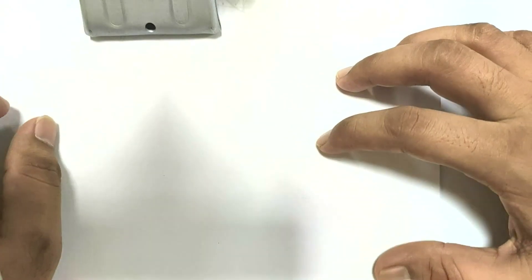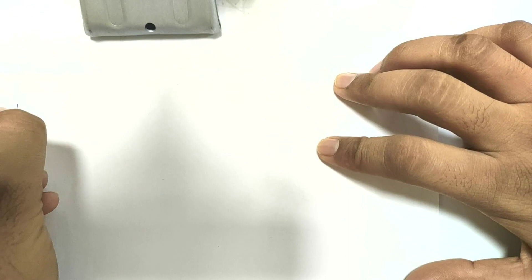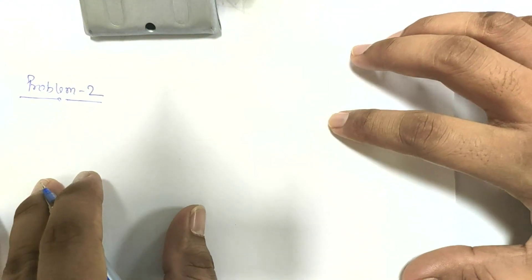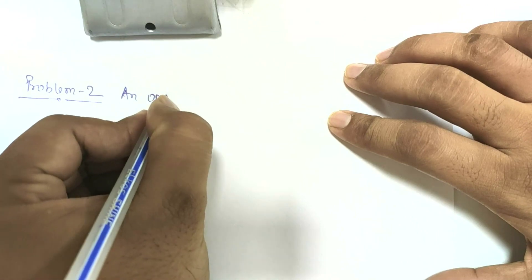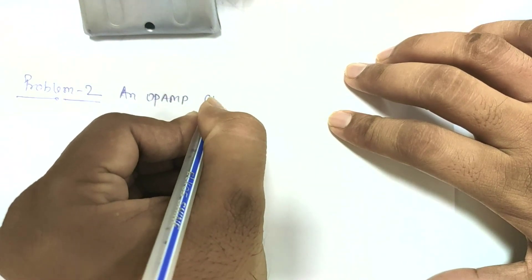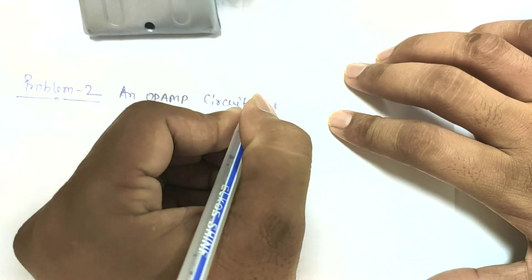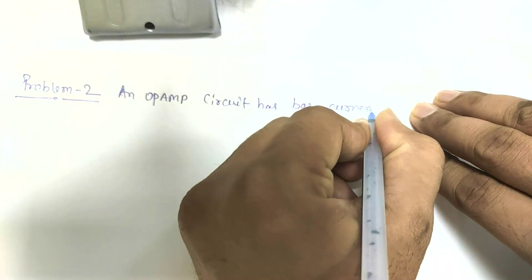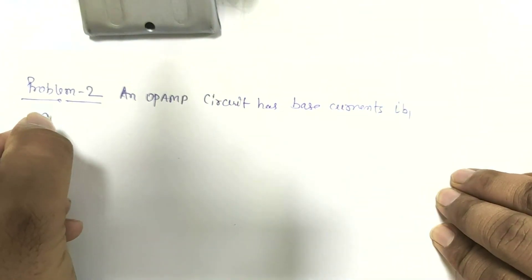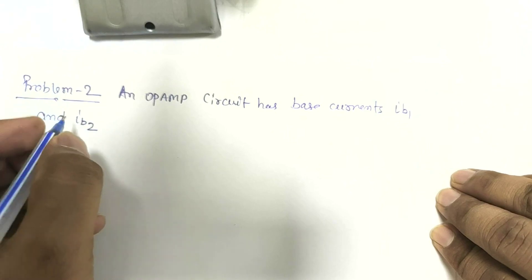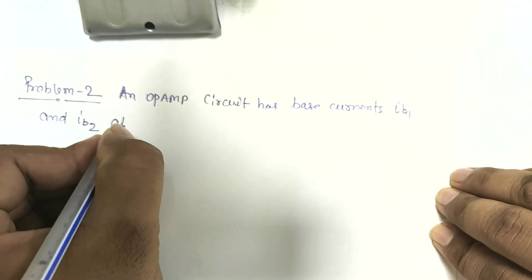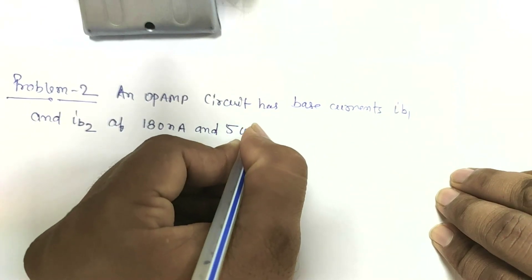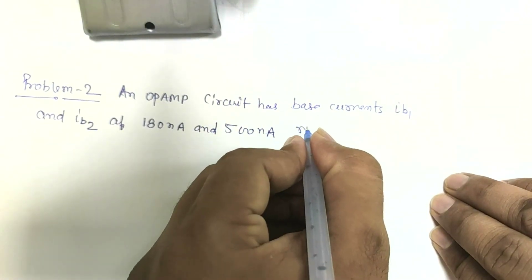Problem 2 for today's lecture: an op-amp circuit has base currents Ib1 and Ib2 of 180 nanoampere and 500 nanoampere respectively.